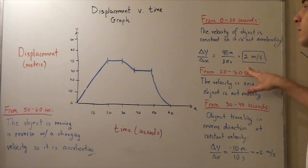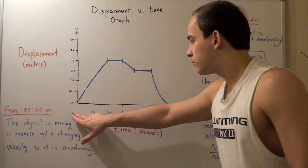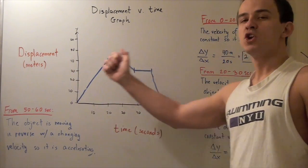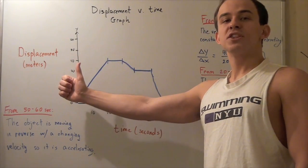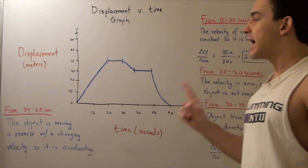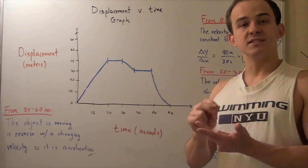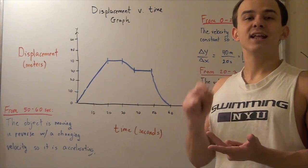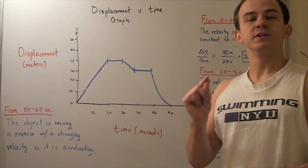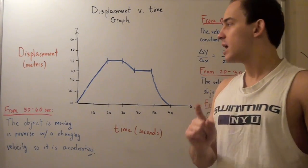If we define our positive direction going this way, that means from zero to twenty seconds our object is moving in the positive direction with a constant velocity of two meters per second. And because velocity is not changing — its magnitude as well as direction stays the same — our object is not accelerating. For an object to accelerate, it must change either its direction or the magnitude of its velocity vector.